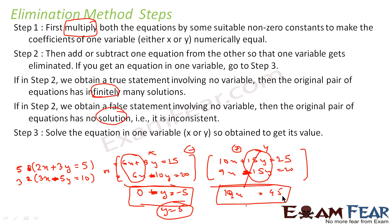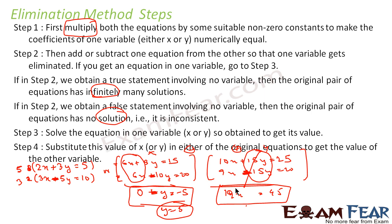Once we have achieved that: if we get a true statement, it has infinite solutions; if we get a false statement, it is inconsistent with no solution; and if we get a unique value, the lines meet and there is a unique solution. We'll take some examples. Once we have x or y, we can substitute to get the full answer.